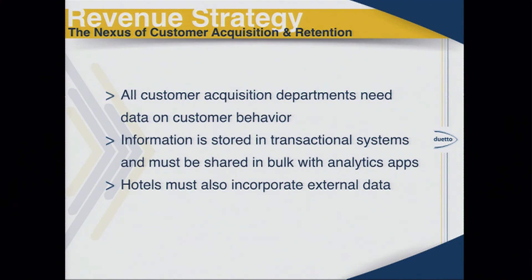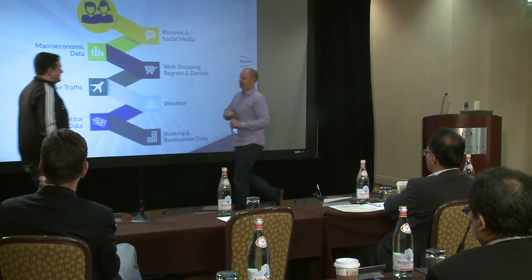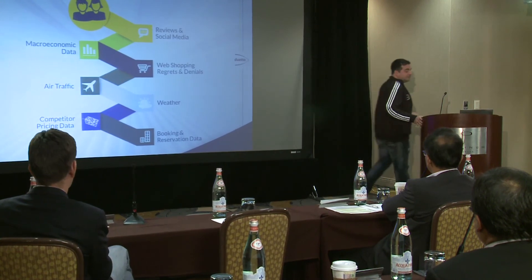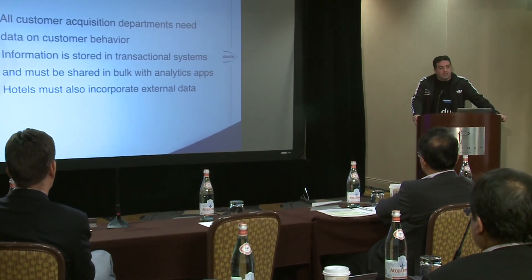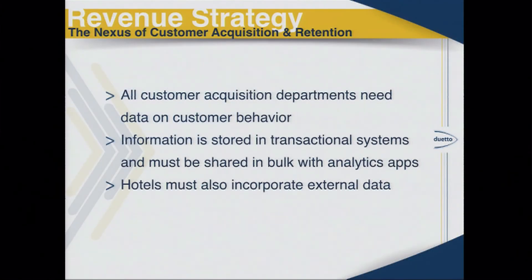Hotels now increasingly need to start incorporating external data as well. I'll hand it over to Marco to talk about some of the external data we're pulling into our application and that others are starting to look at, and then dive deeper into revenue strategy. Let me back up for a second and talk about what revenue strategy is and why revenue strategy and big data are very much interlinked. In my career before Duetto, I worked on the Las Vegas Strip for several casinos, and that to me is the best example of how revenue strategy and big data need to come together.